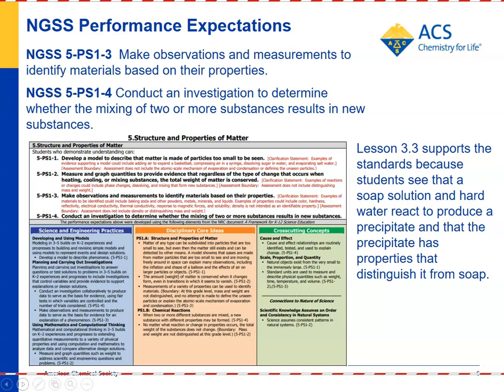For the NGSS standard 5PS1-3 — make observations and measurements to identify materials based on their properties — and 5PS1-4 — conduct an investigation to determine whether the mixing of two or more substances results in a new substance — lesson 3.3 supports both standards. Students see that you can identify soap versus soap scum by doing an experiment, and that mixing two or more substances can result in a new substance, the soap scum precipitate.